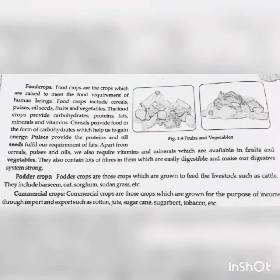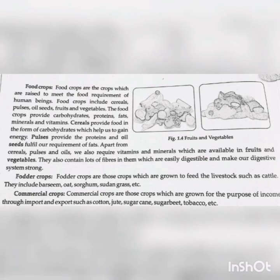Fodder crops are those crops which are grown to feed the livestock such as cattle. They include berseem, oats, sorghum, Sudan grass, etc. Commercial crops are those crops which are grown for the purpose of income, import and exports — such as cotton, jute, sugarcane, sugar beet, tobacco, etc.